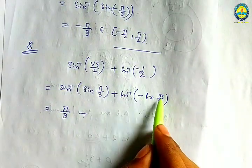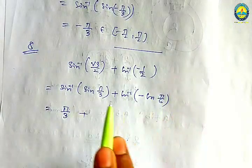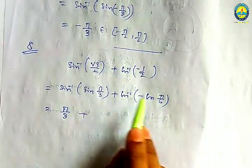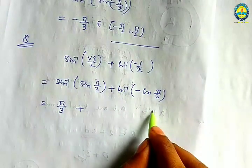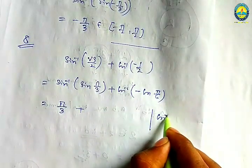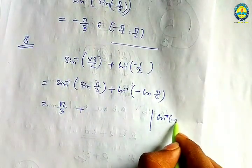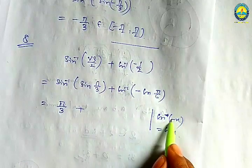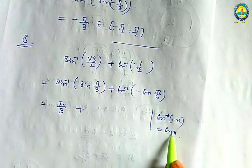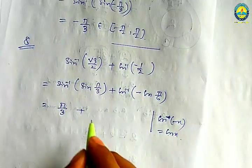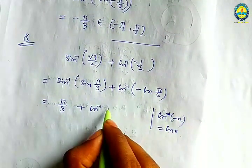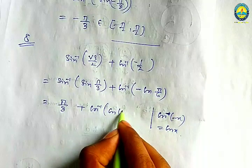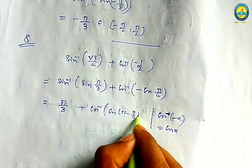Sin inverse x plus cos inverse x equals pi by 2. So two times minus x equals pi minus pi by 6, giving 5 pi by 6.